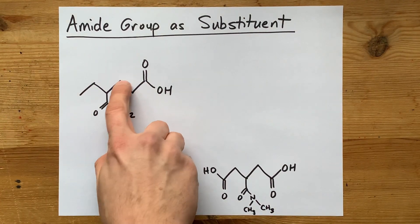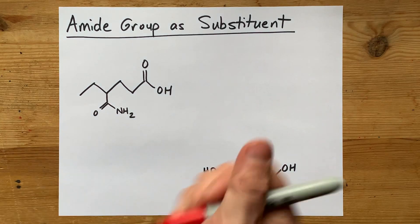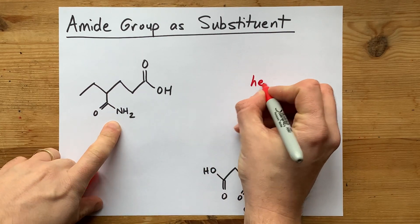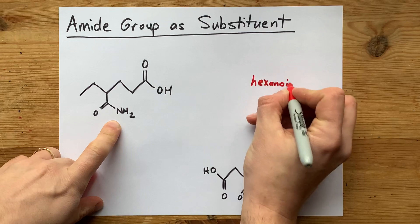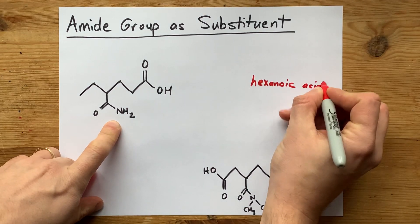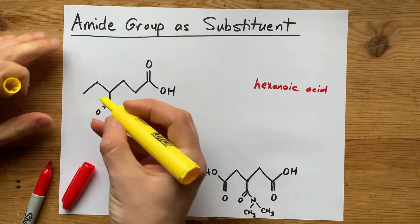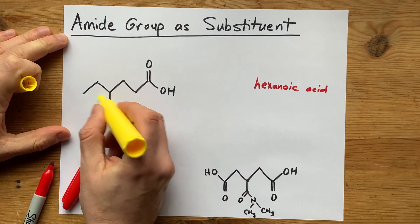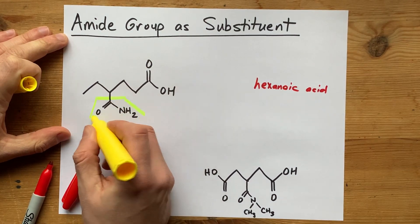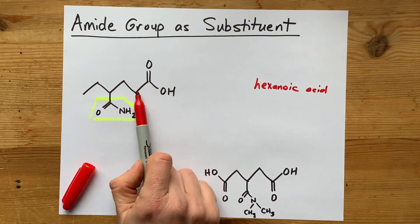One, two, three, four, five, six carbons long. This is actually a hexanoic acid to start with. And then this chunk here is a substituent that happens to be attached to carbon number one, two, three, four.